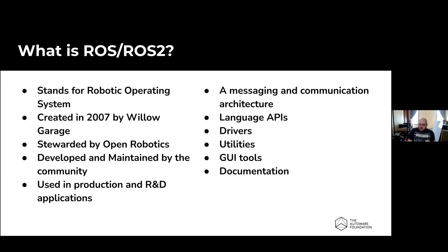ROS is a set of applications that run on different systems. You can run it on Linux, macOS, and Windows. The macOS support has been downgraded to tier three, but there is still an active community and a lot of people are using it on macOS, including the new M1s.